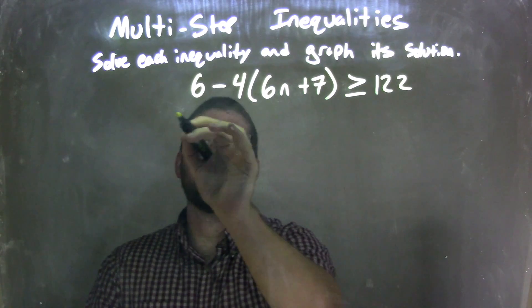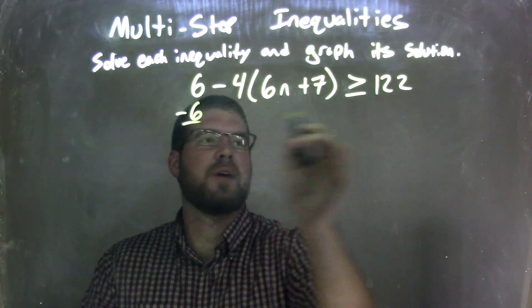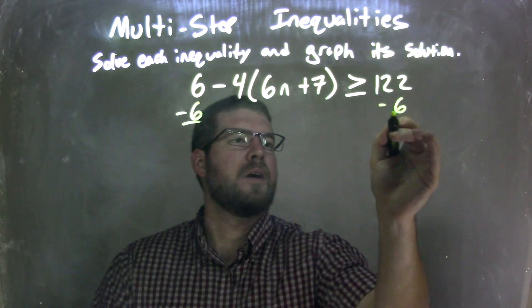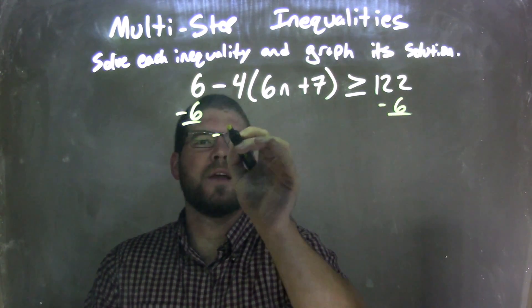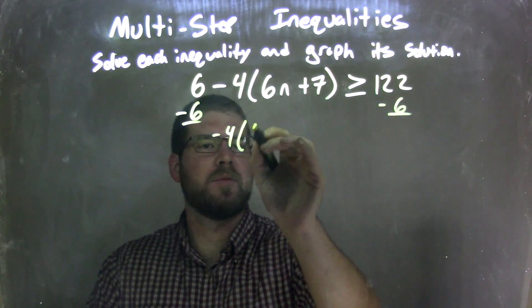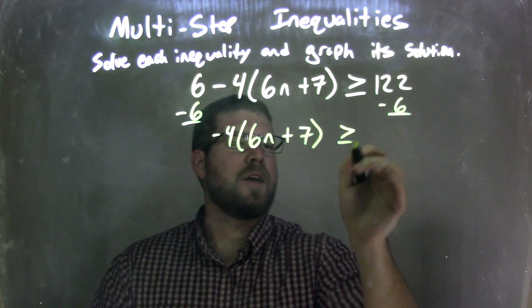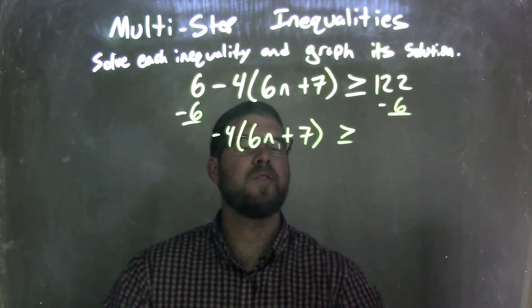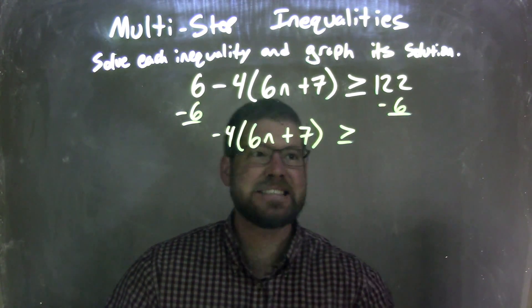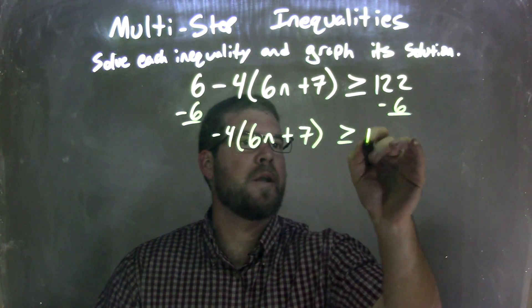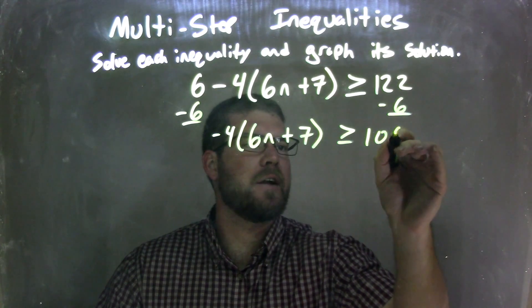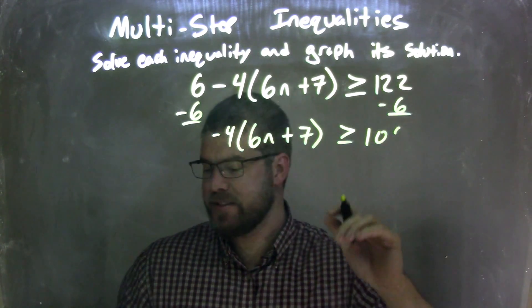In this one here, I'm going to subtract 6 from both sides. That leaves me with negative 4 times the quantity 6n plus 7, is greater than or equal to 122 minus 6, which is 116.